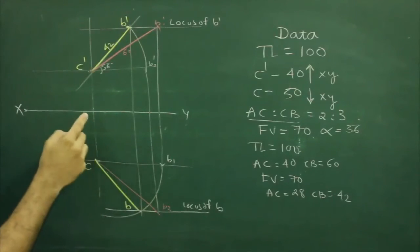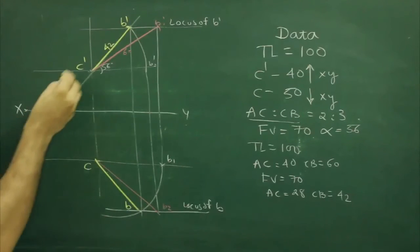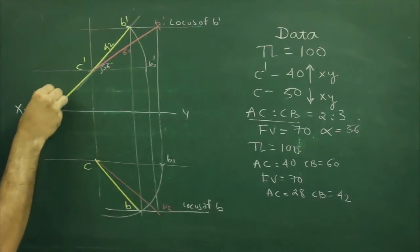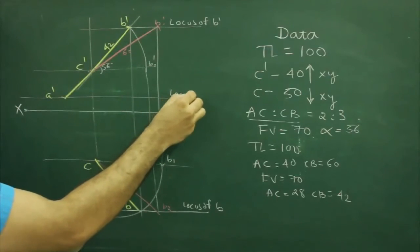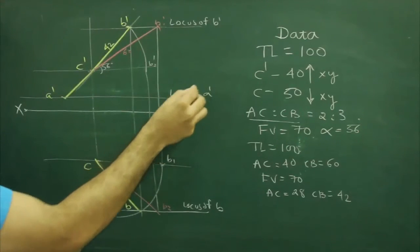We need to extend front view by 28. So from here we will extend by 28 and we will mark that point as A dash. We will draw horizontal line, so this is locus of A dash.